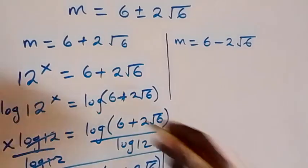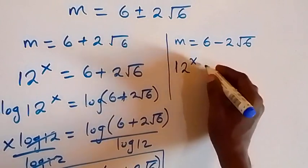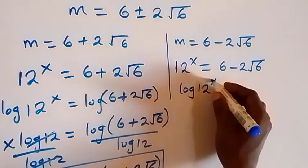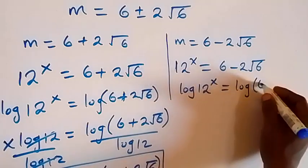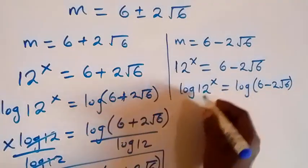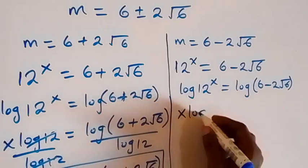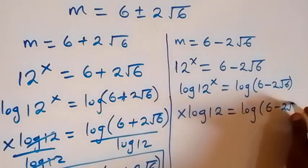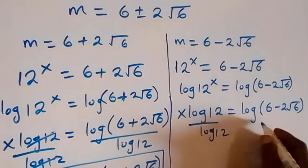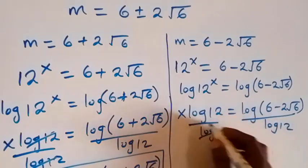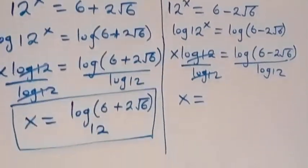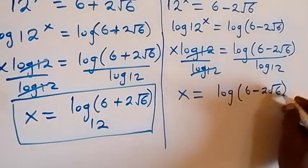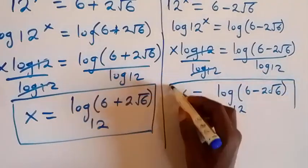From here we also recall that m equals 12 raised to power x, which equals 6 minus 2 root 6. Taking the log on both sides: log of 12 raised to power x equals log of (6 minus 2 root 6). Applying the power log rule, x log 12 equals log(6 minus 2 root 6). Dividing by log 12, and using change of base, x equals log base 12 of (6 minus 2 root 6). So here we have another solution to this problem.